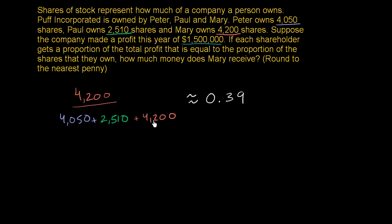And so if we want to figure out how much profit she gets, she gets this much times the total profit. So Mary gets 0.39.